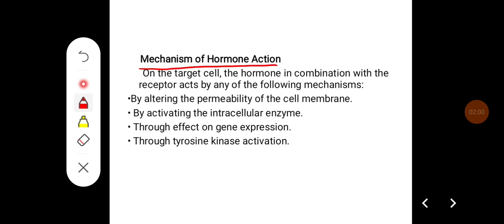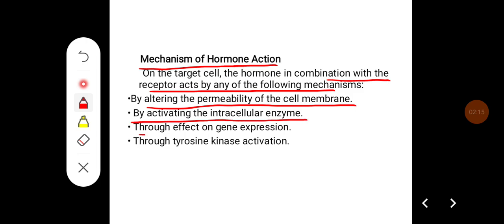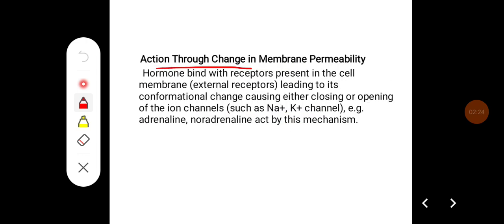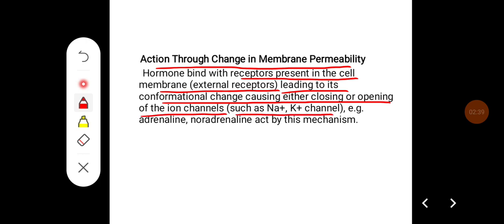Mechanism of hormone action: on the target cell, the hormone in combination with the receptor acts by any one of the following mechanisms — by altering the permeability of the cell membrane, by activating intracellular enzyme, through effect on gene expression, or through tyrosine kinase activation. In action through change in membrane permeability, the hormone binds with the receptor present in the cell membrane, called external receptors, leading to conformational changes causing either closing or opening of ion channels such as sodium-potassium channels. For example, adrenaline and noradrenaline act by this mechanism.